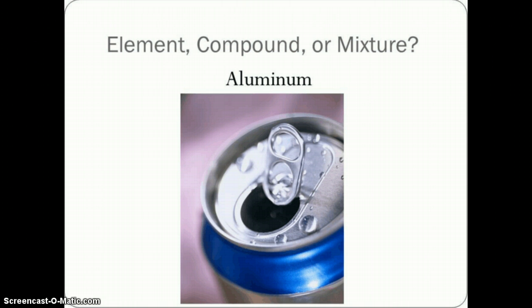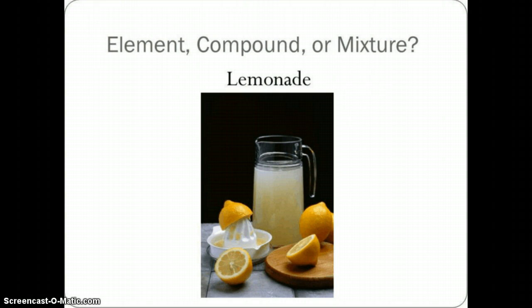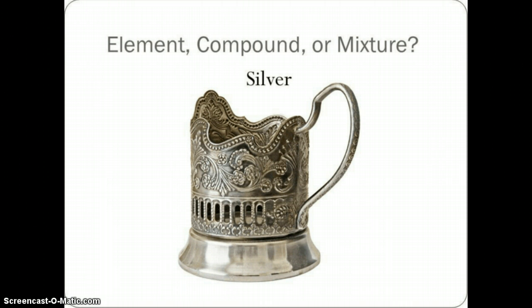Aluminum — element, compound, or mixture? It's an element. Next, lemonade — I talked about this one briefly yesterday. It is a mixture. We mix the lemonade powder and dissolve it into water, so not only is it a mixture, but it's a solution. Silver is an element — we know it's on the periodic table, chemical symbol Ag.